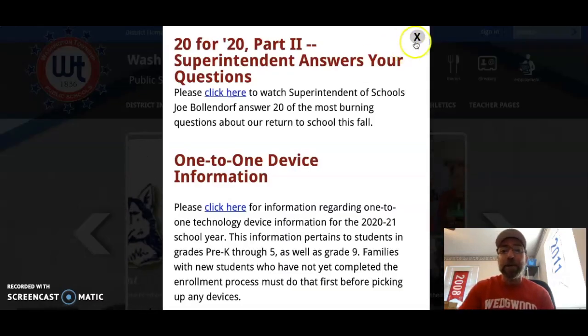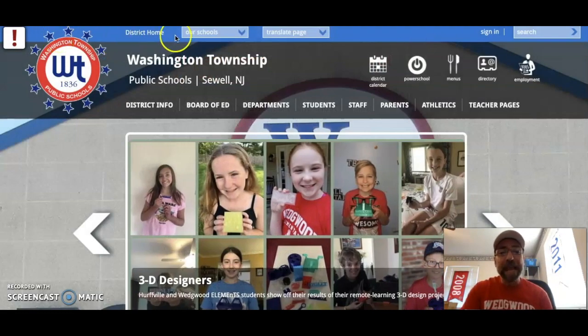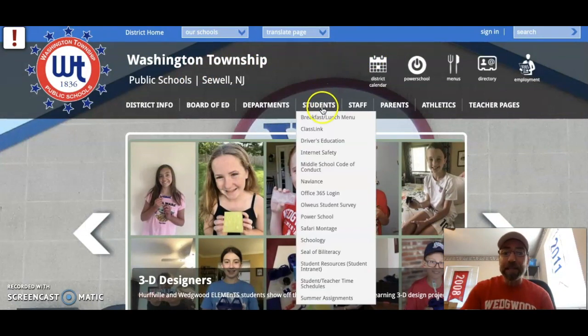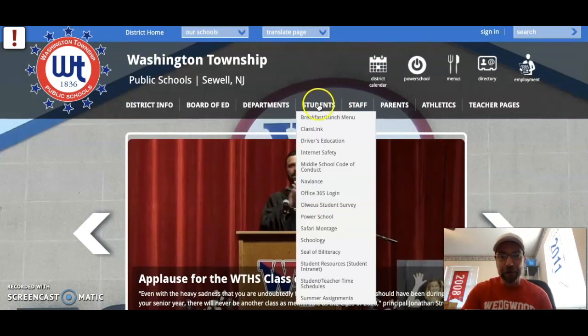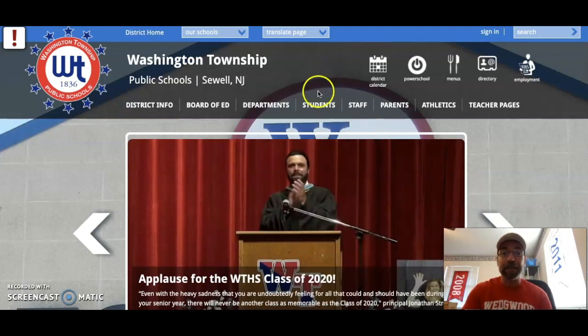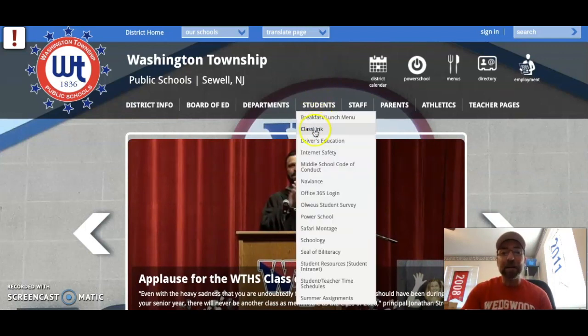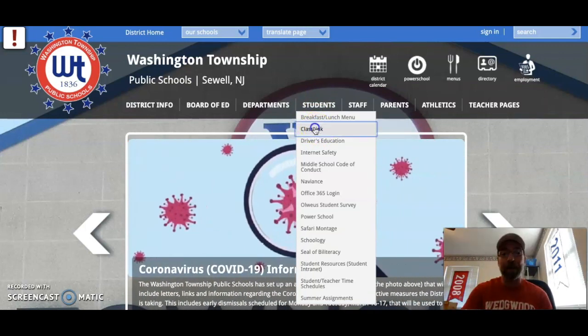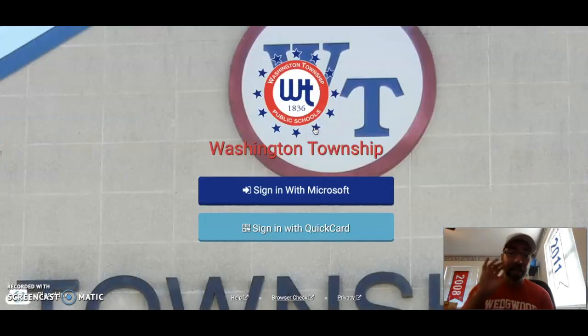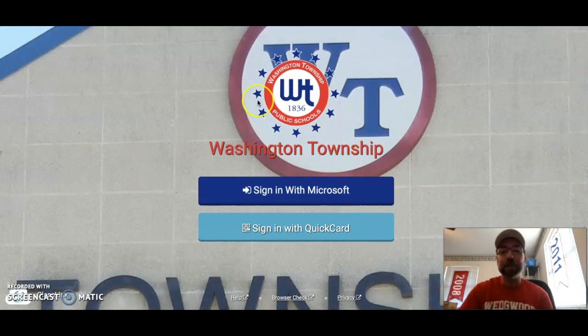The first thing you're going to do is go to the WTPS.org website. Once there, you're going to see the word students. You're going to hover over it, don't click on it, just hover over it. See, when I hover over it, a menu appears. And I want to scroll down until I get to the word class link. It's the second word on there. And when I press class link, it takes me to a sign in page.